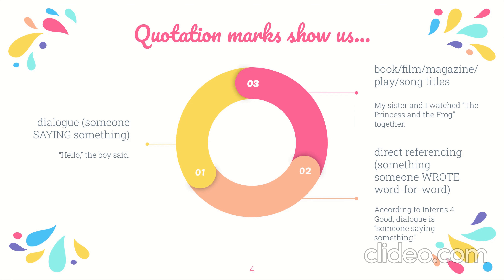The third thing you can use quotation marks to show are book, film, magazine, play, song, and other titles. For example, 'My sister and I watched The Princess and the Frog together.' That's the third way you can use quotation marks. Today we're just going to be focusing on dialogue.